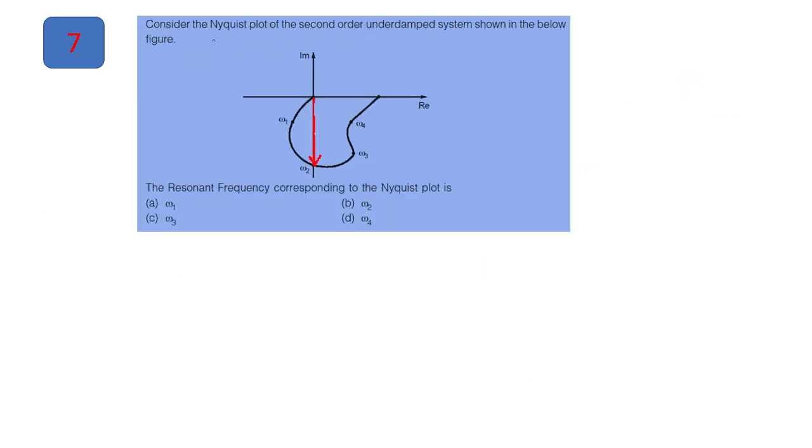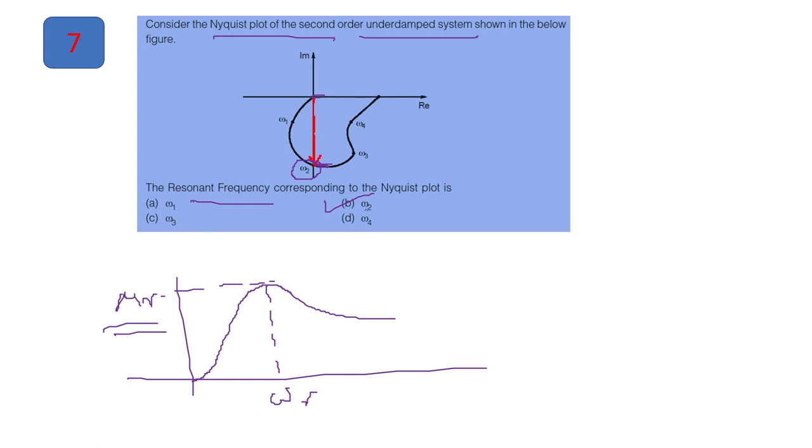Next for question. The Nyquist plot of a second order underdamped system is given. And we have to find the resonant frequency. So if we have the frequency response plot. So you get the natural frequency. At this point, you get the maximum resonance peak. So to find the answer for this, you have to just check whether you are having this amplitude as a highest. So wherever you find this vector as a highest length, that frequency will be your resonant frequency. So for this given question, option 2 which is omega 2 will be the correct answer.